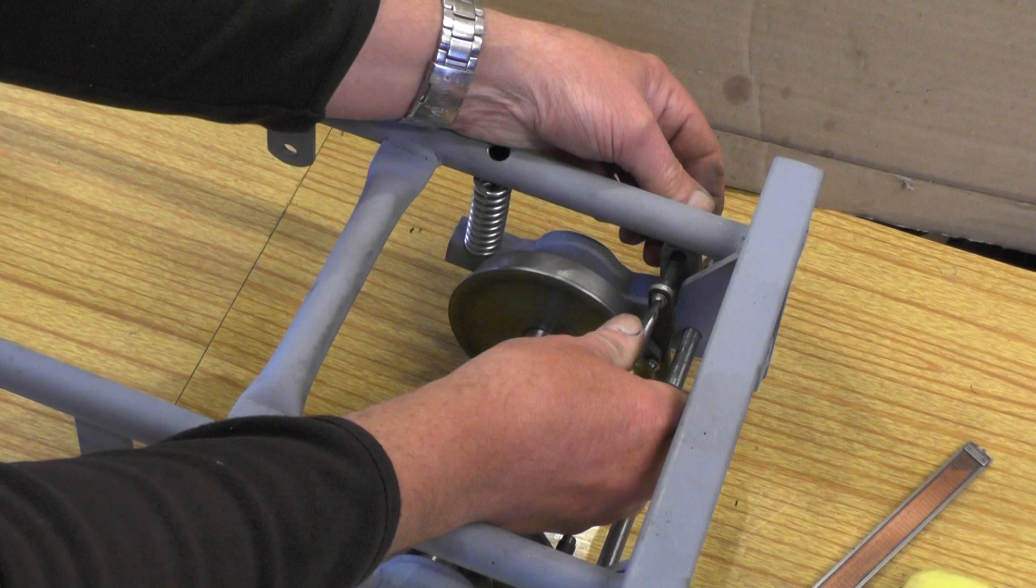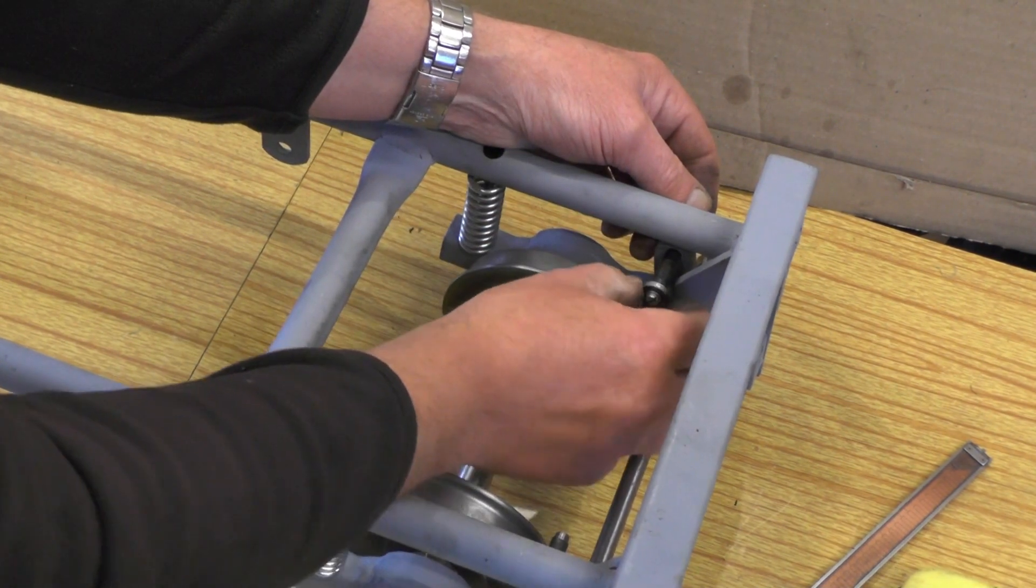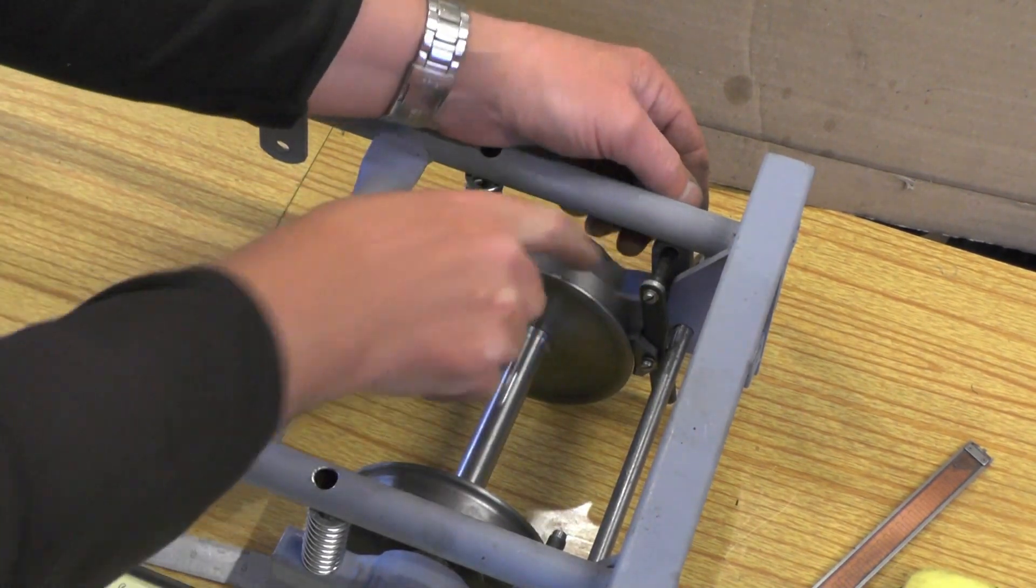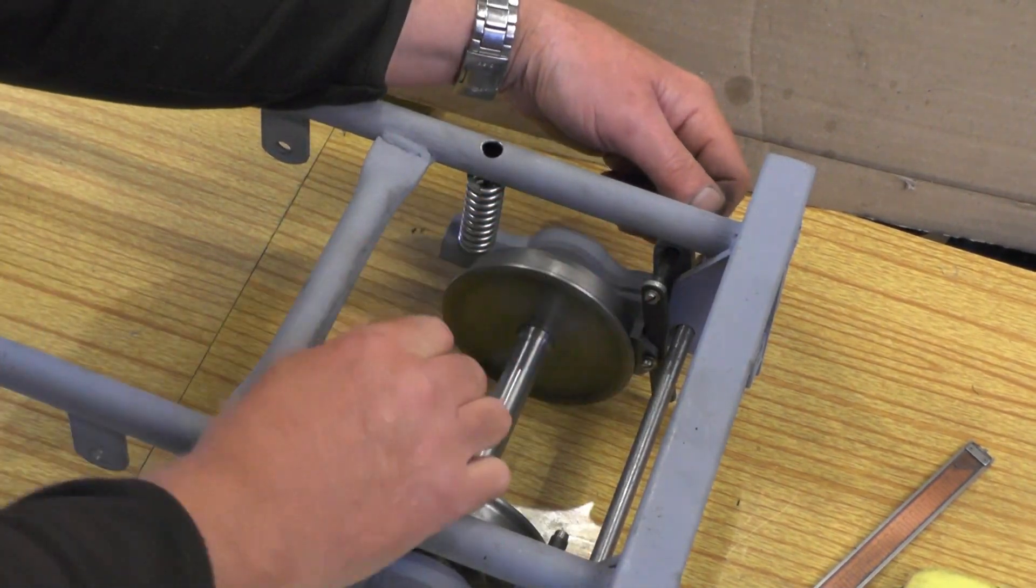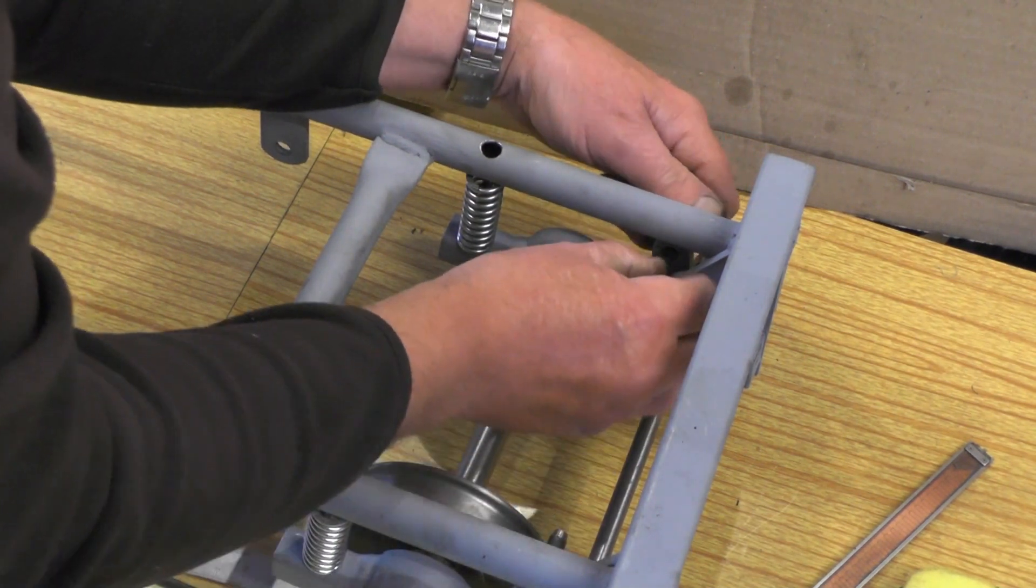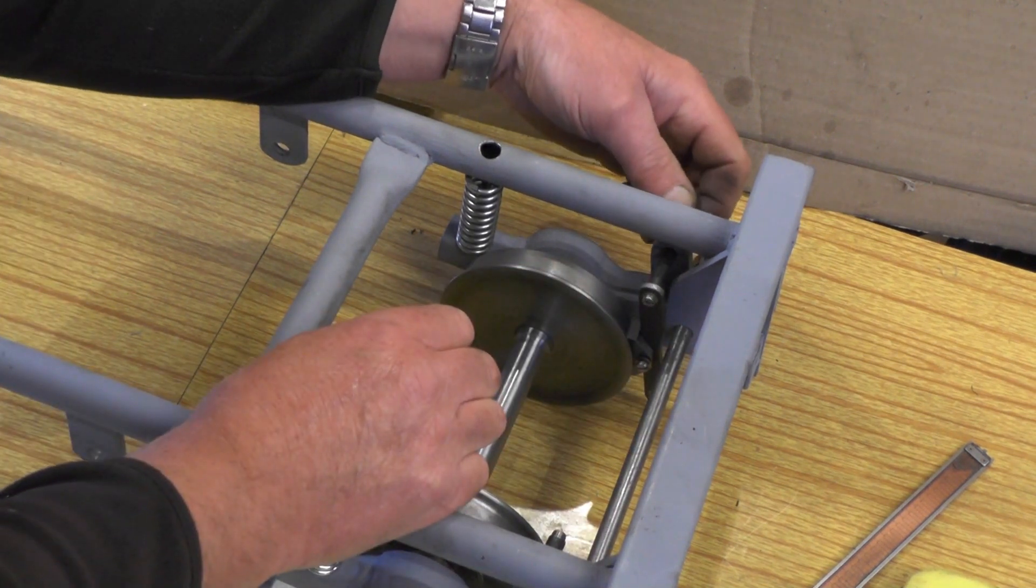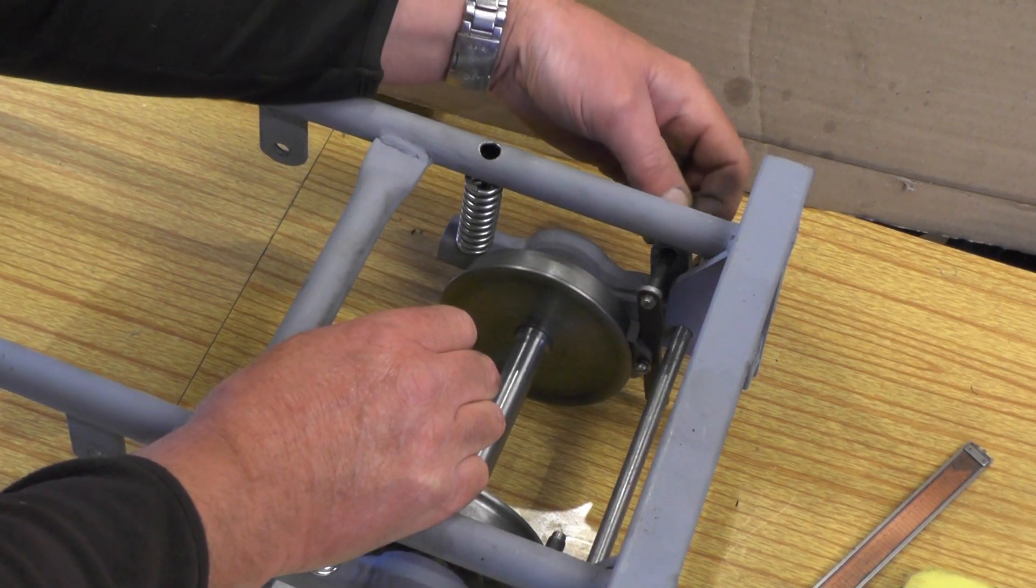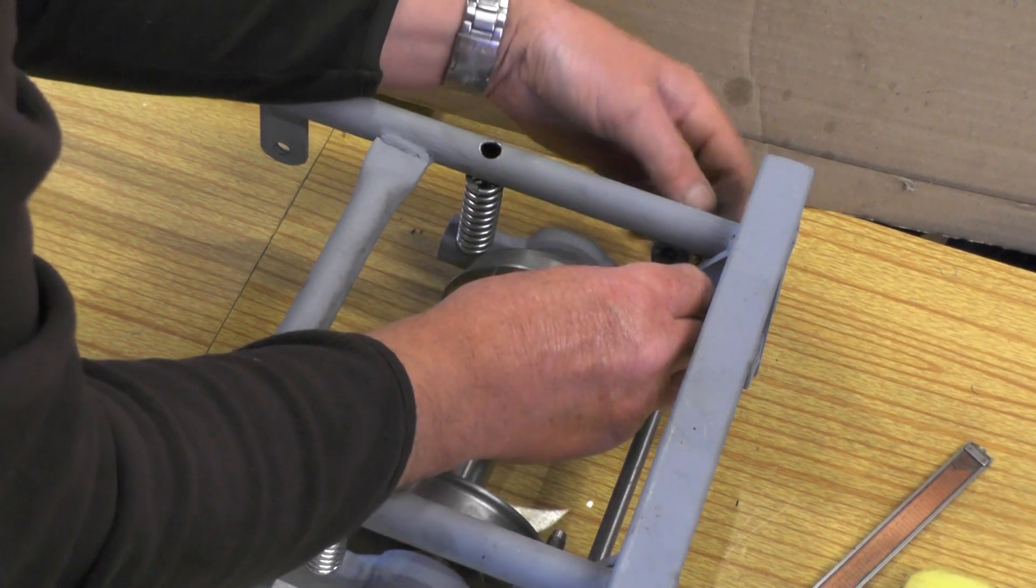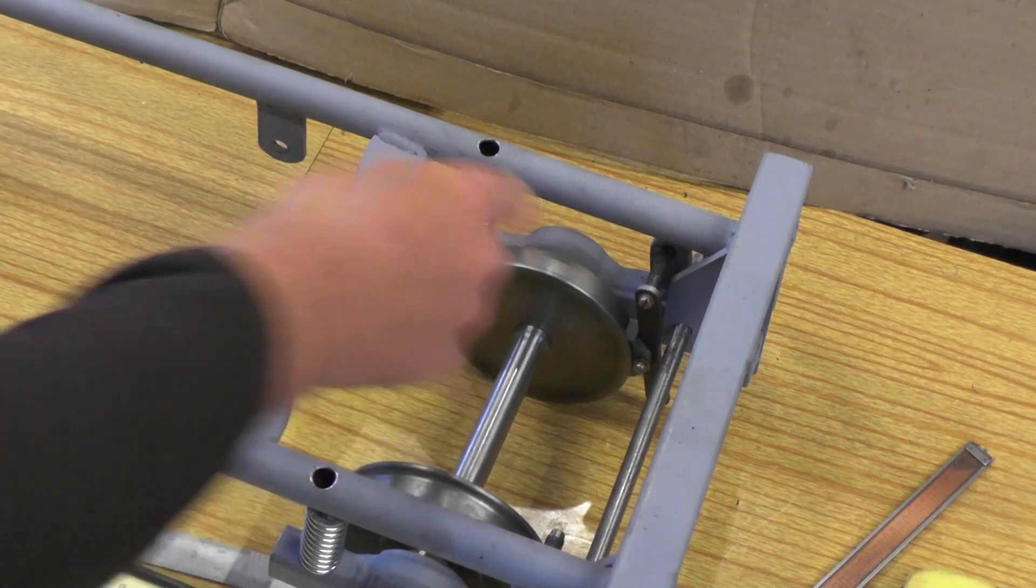And then that's just going to fasten up with a four BA screw. Once you've got that fastened, that should still be able to move. And then the center of the brake shoe wants to be in the center of the wheel, which can be adjusted with this thread. And once that's in the center, you can lock it with the locking nut. So there's four of those now to put on.